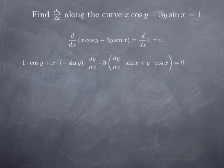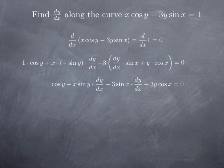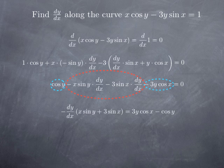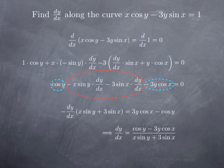All this equals 0. Multiplying through and simplifying: cosine y minus x sine(y) times dy/dx minus 3 sine(x) times dy/dx minus 3y cosine(x) equals 0. We collect the dy/dx terms on the left and move the remaining terms to the right, so negative cosine y becomes positive 3y cosine x on the right. Dividing both sides by the factor in front of dy/dx, we obtain dy over dx equals (cosine y minus 3y cosine x) divided by (x sine y plus 3 sine x).